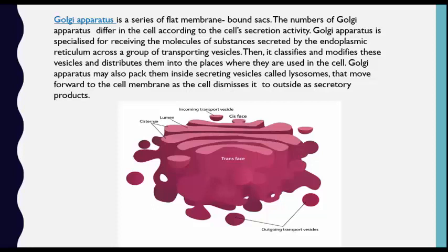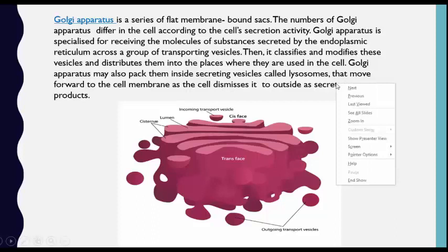The Golgi apparatus is specialized for receiving the vesicles of substances secreted by the endoplasmic reticulum across a group of transporting vessels. It then classifies and modifies these vesicles and distributes them to the places where they are used in the cell. The Golgi apparatus may also pack them inside secreting vessels called lysosomes.